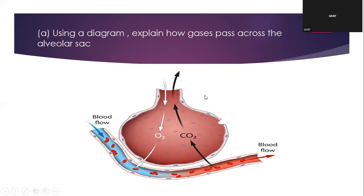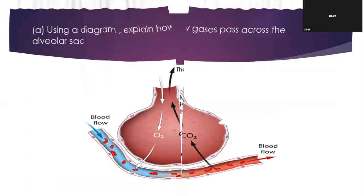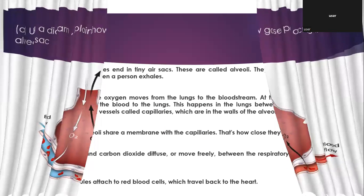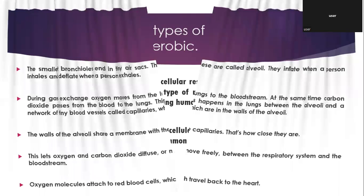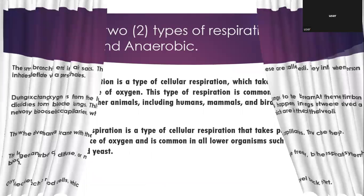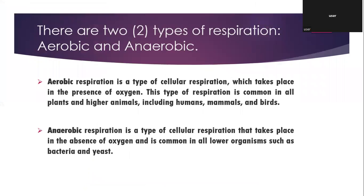That is it for my part of the presentation. We're now going to be moving on to the two types of respiration, which are aerobic and anaerobic respiration. Aerobic respiration is a type of cellular respiration which takes place in the presence of oxygen. This type of respiration is common in all plants and higher animals, including humans, mammals, and birds. In basic terms, aerobic respiration requires oxygen. However, anaerobic respiration can occur without the use of oxygen.